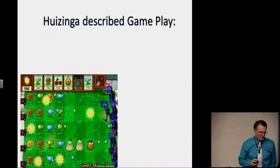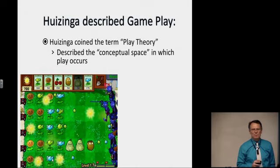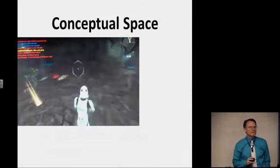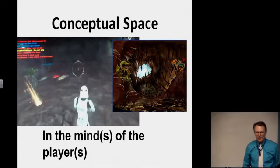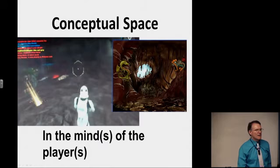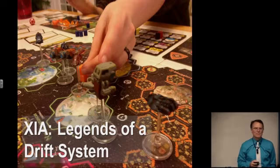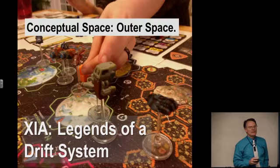We then coined the term play theory and described the conceptual space in which play occurs — this is going to be an important term for us. Any game you've got is going to involve conceptual space, which is in the mind of the player. For example, in Star Wars Battlefront II, the game takes place in an underground cave. In XIA Legends of a Drift System, the game takes place in outer space, on planets, asteroids, and astronomical phenomena — the conceptual space on that game board is outer space.